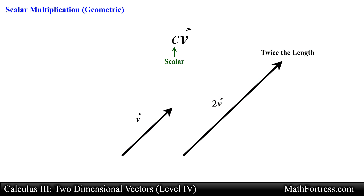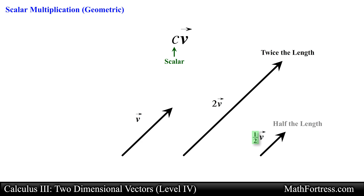In the same manner, if we want to reduce the length of vector V by half, we would denote it as 1/2 times vector V. Here the scalar is 1/2 and it instructs us to take vector V and reduce its length by half, keeping the same direction.